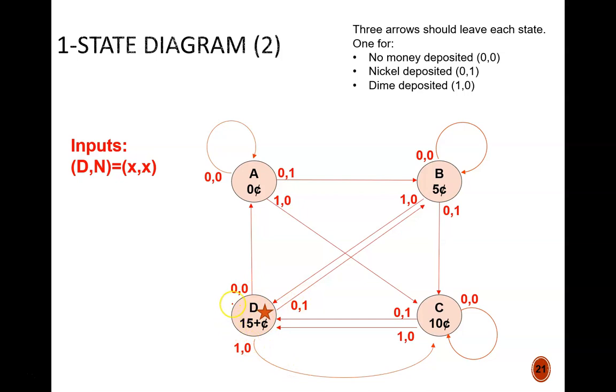Now for the arrows. With no money deposited, the memory returns to 0 cents. With a nickel deposited, the memory returns to 5 cents. And with a dime deposited, the memory returns to 10 cents. These would be situations of a customer paying for one soda, and then immediately starting to pay for another one. We've spent a lot of time on this state diagram, and for good reason. This is where the real design work exists. All downstream steps are just converting this diagram into a functional circuit.